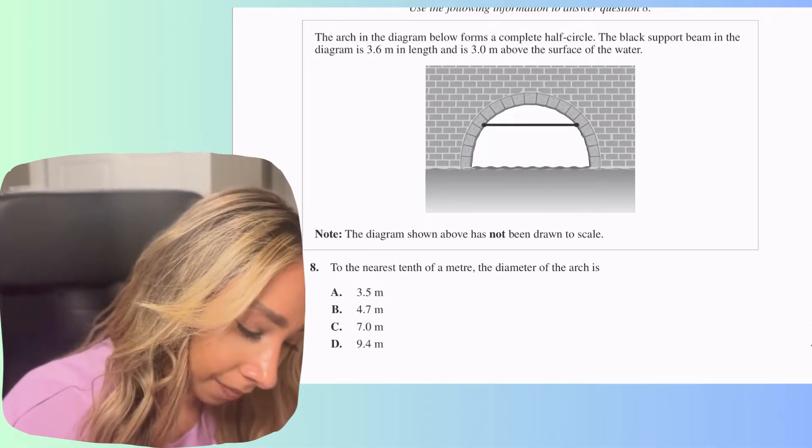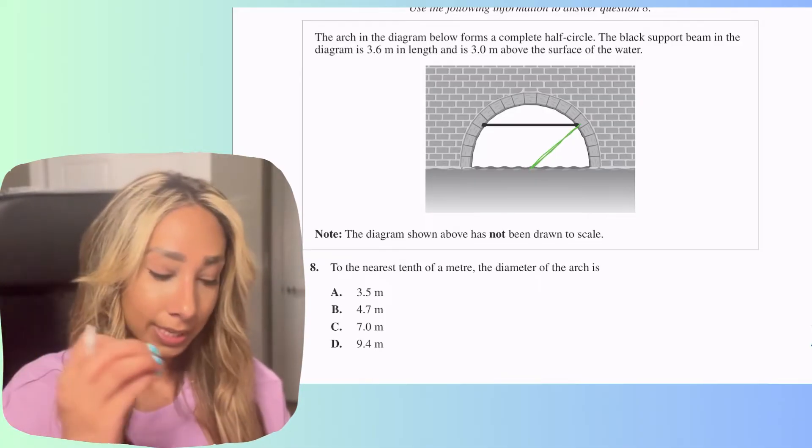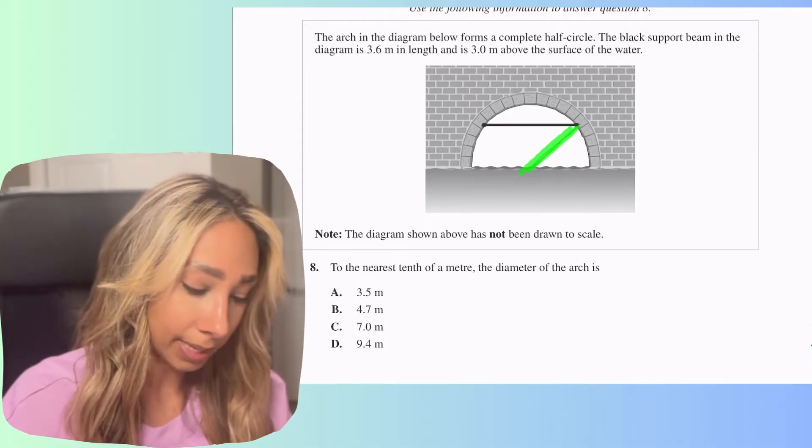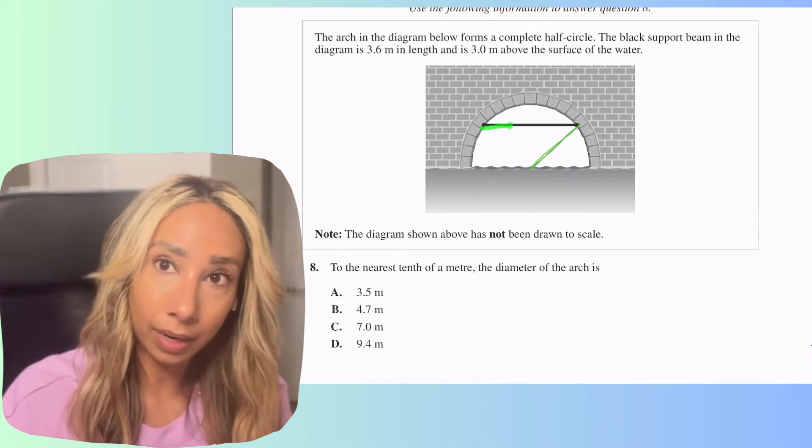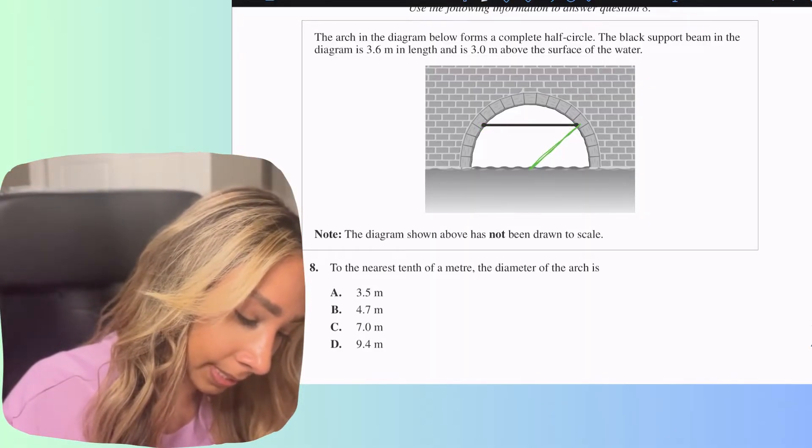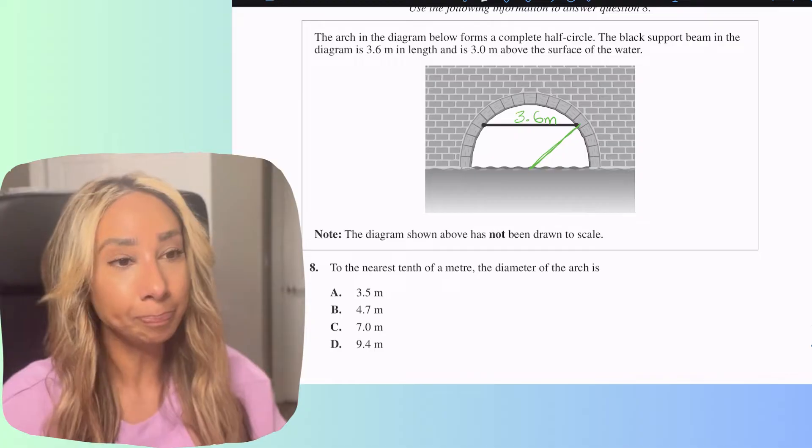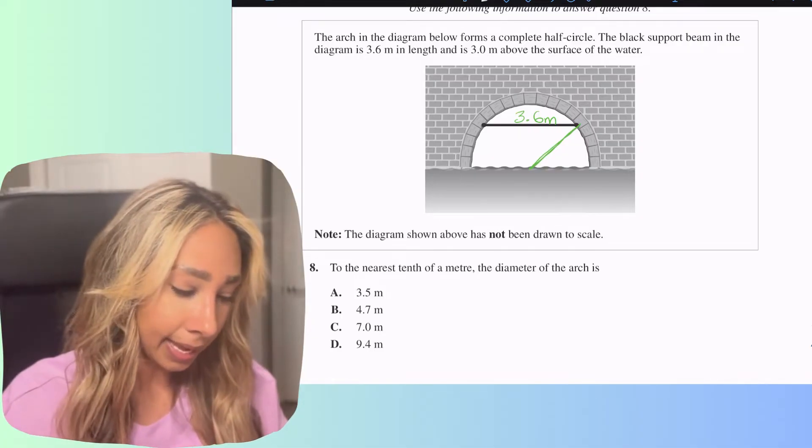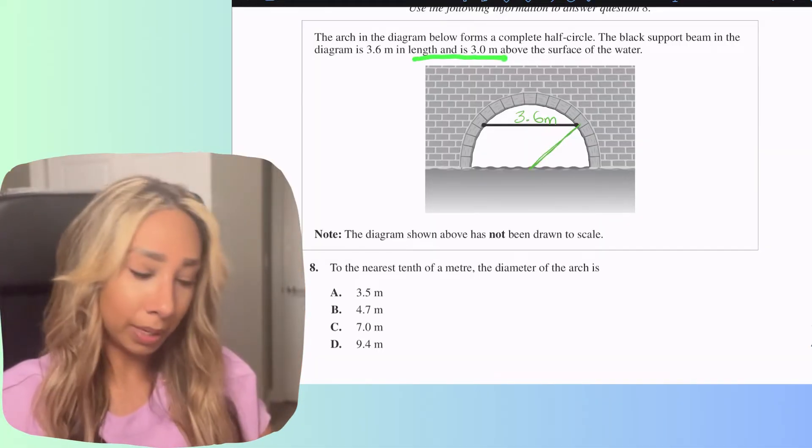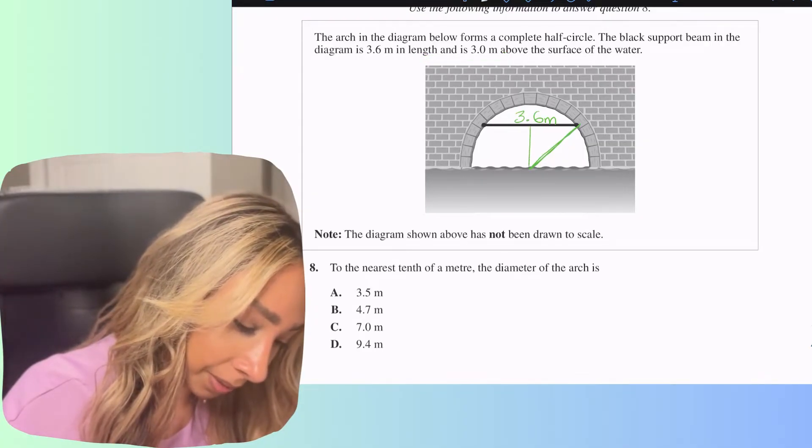If I draw a line between here and here, so to the edge of the circle to the center, that is going to be my radius. This right here is my radius. Okay that's helpful. We do know the length here so we know that's going to be 3.6 meters. Our radius we're not sure about, that's what we're trying to solve and if we double it then we're going to be able to find our diameter. We also know the length of the support beam to the water is 3 meters. That means I can draw a line right here to here and that has to be 3 meters.